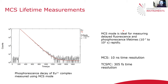MCS mode is ideal for measuring longer lifetimes where TCSPC would be too slow, such as delayed fluorescence and phosphorescence. An example shown on the left is the phosphorescence decay of a europium complex measured using MCS mode, which revealed a lifetime of about 120 microseconds. MCS mode is the faster of the two techniques, but the downside is a much lower time resolution: MCS has a 10 nanosecond time resolution, whereas TCSPC has 305 femtoseconds. So TCSPC is the method of choice for fast fluorescence lifetimes or lifetimes with very fast components requiring high time resolution, while MCS mode is the method of choice for delayed fluorescence and phosphorescence where you want to acquire your measurement quickly.